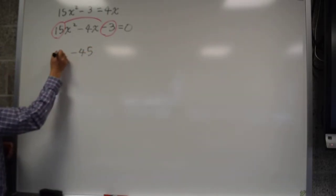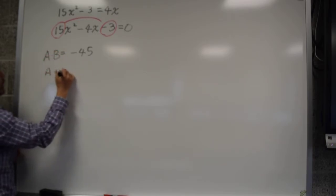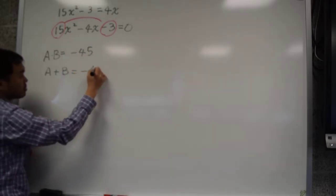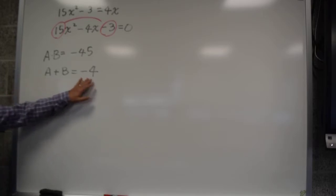And what you want to do is you want to find two numbers that multiply to that number, and two numbers that add to the middle number. And when you write the middle number, make sure you include the signs. So if it's like a plus b equals negative 4, you have to include this negative.